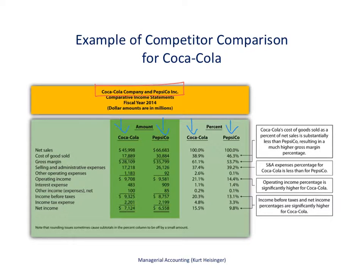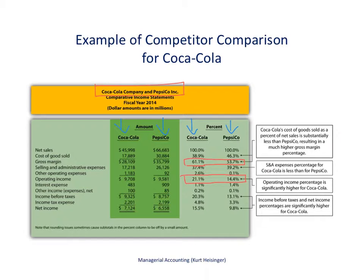Looking at a couple of key numbers: the gross margin for Coca-Cola is 61.1%, that's their gross margin divided by net sales, while for PepsiCo it's 53.7%. So Coca-Cola clearly has a higher gross margin percentage. Another key item is operating income as a percentage of net sales — the income from daily core operations. For Coca-Cola that was 21.1%, and for PepsiCo it was 14.4%. Coca-Cola has a higher operating income percentage as well. This is just another way to use common-size analysis to compare companies.